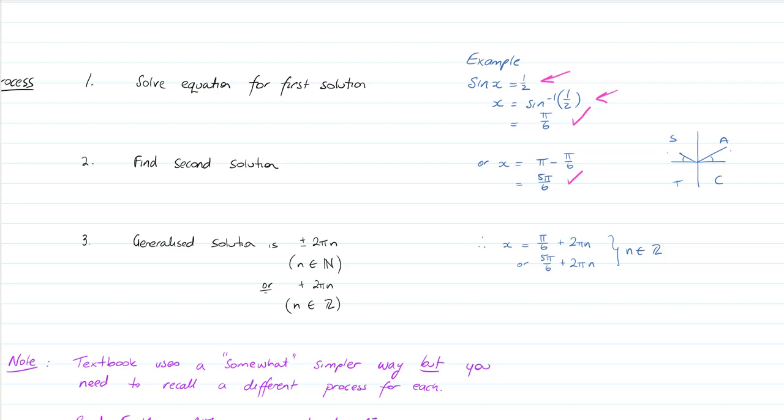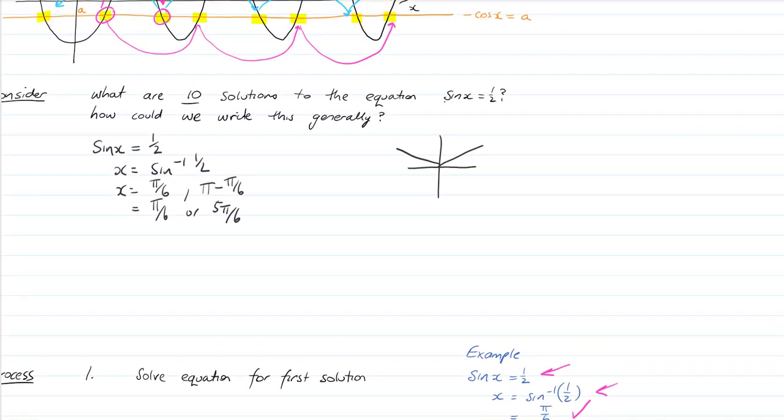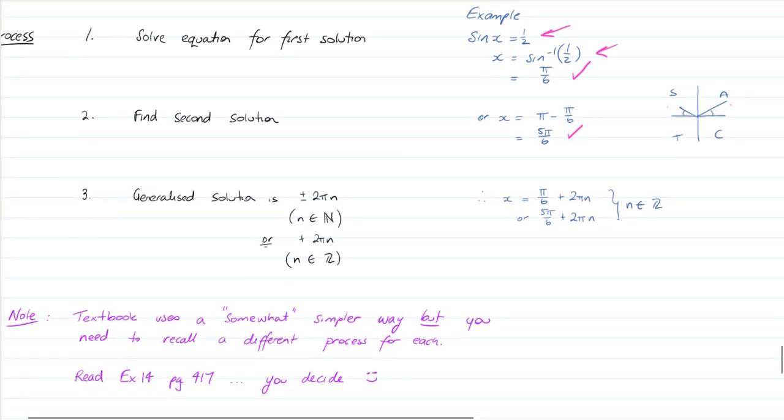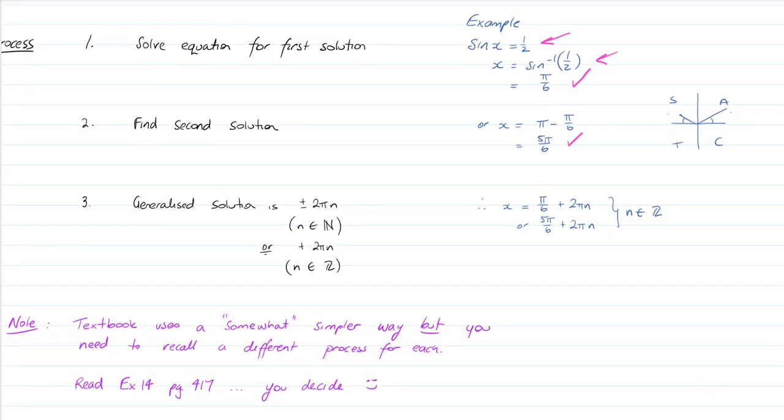Step 3 is a generalized solution. We talked about just adding or subtracting groups of 2π. To generalize, if n is some integer, then all the solutions are represented by π/6 plus or minus 2πn, or 5π/6 plus or minus 2πn. That will give us every single possible solution. That is the generalized solution.